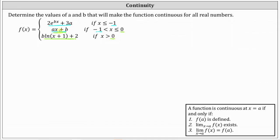So let's go ahead and set this up using the first and second function rule. Two times e to the power of bx plus three a must equal ax plus b at x equals negative one, and ax plus b must equal b natural log of the quantity x plus one plus two at x equals zero. If these two conditions are met, the piecewise function will be continuous.